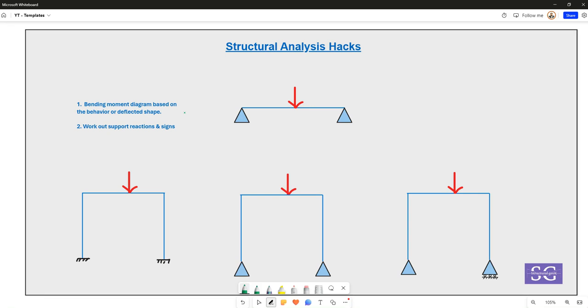When we get to the bending moment diagram, just look at the behavior and get the deflected shape. That is the most common strategy that is followed. Let's take an example of this particular simply supported beam having a point load at the mid-span.